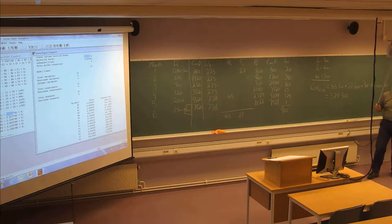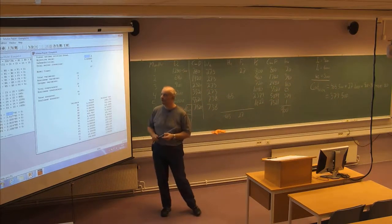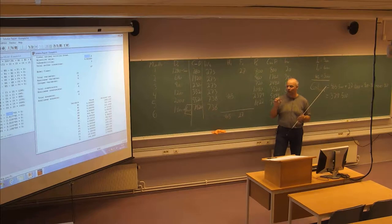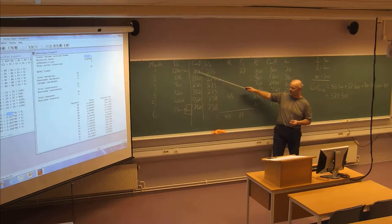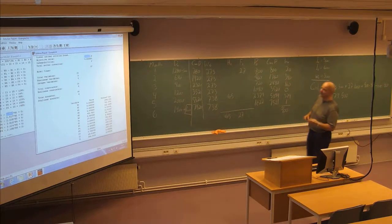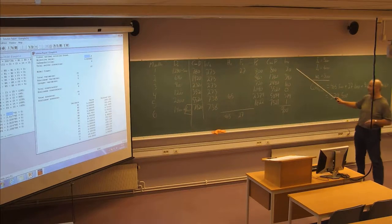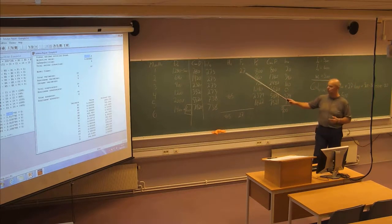So here we have seen different strategies of solving the same aggregate planning and production problem. We had one extreme strategy according to a constant workforce — find out how many people you need to meet the cumulative demand for any month. We have another extreme strategy of trying to produce exactly what you need, so-called zero inventory, or as close to zero as possible. You will not have much inventory cost, but you have to hire and fire people to meet the demand for each month.